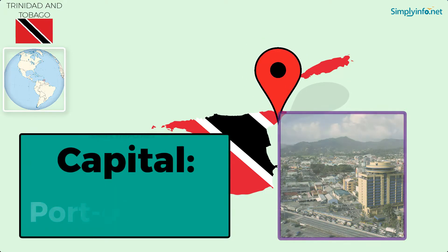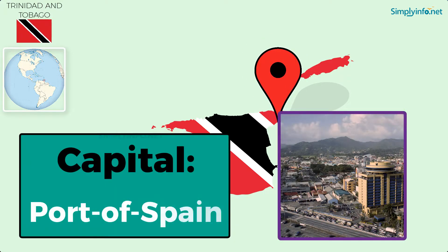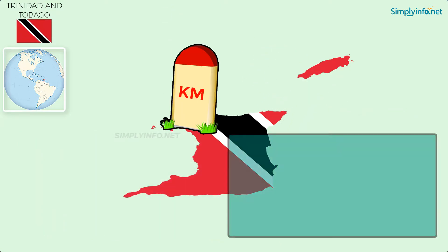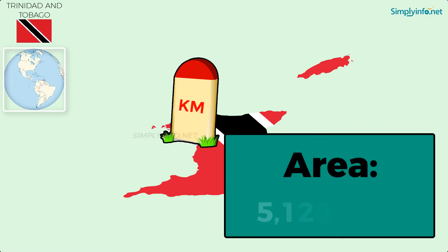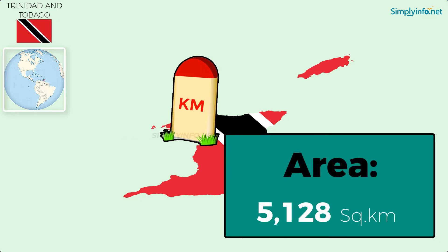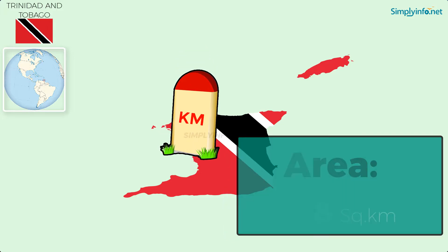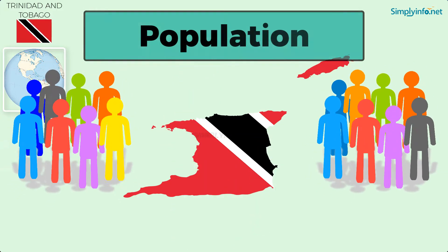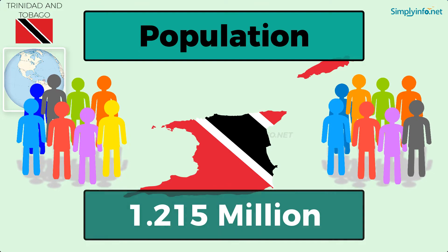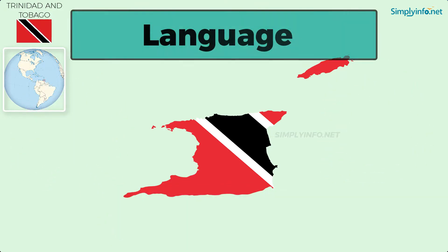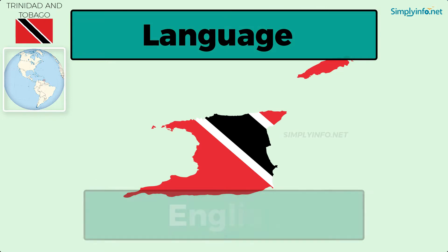Capital: Port of Spain. Area: 5,128 square kilometers. Population as of 2018: 1.215 million. Language: English.